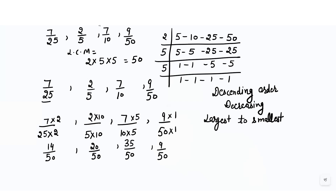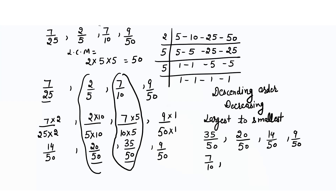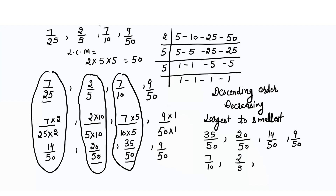In descending order: 35/50 first, then 20/50, then 14/50, then 9/50. Converting back to original fractions: 35/50 = 7/10, 20/50 = 2/5, 14/50 = 7/25, and 9/50 = 9/50.